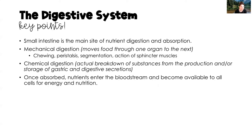Some key points to remember: the small intestine is the main site of nutrient digestion and absorption. Mechanical digestion moves food from one organ to the next through chewing, peristalsis, segmentation, and sphincter muscles. Chemical digestion is the actual breakdown of substances from the production and storage of gastric and digestive secretions. Once absorbed, nutrients enter the bloodstream and become available to all body cells for energy and nutrition.